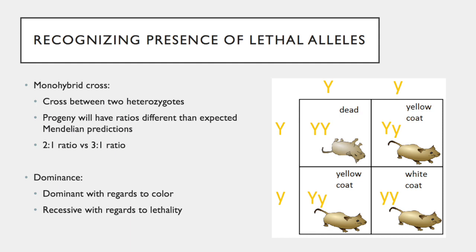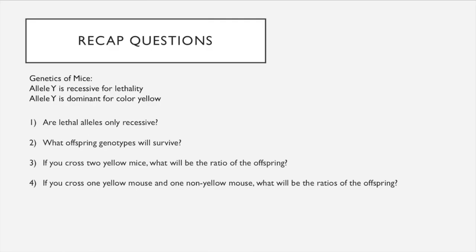In typical Mendelian genetics, we would expect to get a 3 to 1 ratio of yellow to white mice. However, if a 2 to 1 ratio is observed instead — with only two yellow mice with heterozygous genotypes in relation to one pure white mouse — then we can predict that the big Y allele is not only causing yellow fur color, but is also a recessive allele for lethality. Any homozygous big Y big Y combinations would result in organism death and will not be observed. So in summary, gene Y is a pleiotropic gene coding for fur color and lethality, with allele big Y being dominant for yellow fur color and recessive for lethality.